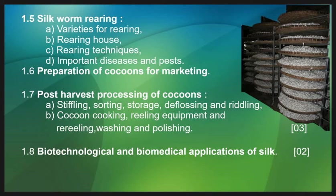In Topic 1.6, we will study the preparation of cocoon for marketing. After the silkworm has made a silk thread in the form of a cocoon, we apply some processes to it. In Topic 1.7, post-harvesting processing of cocoon — we will study different processes such as stifling, sorting, storage, deflossing, reeling, cooking, and reeling. In Topic 1.8, we will study the biotechnological and biomedical applications of silk.